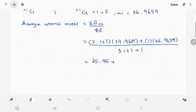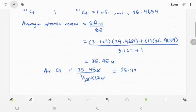So how to cancel the unit u? The answer is equal to 35.45 u over 1 over 12 times 12 u. So cancel the unit u, cancel the 12, you will get the answer 35.45 with no unit because this is the relative atomic mass. That's all. Thank you.